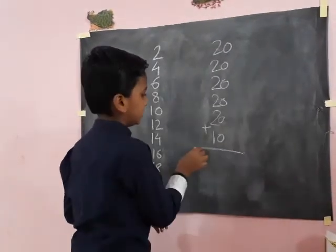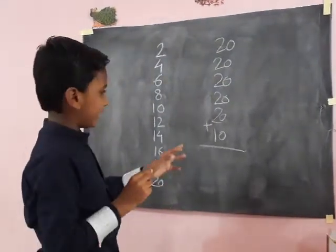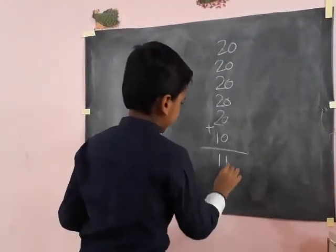Let's do it. 20 how many times? 1, 2, 3, 4, 5. 5 times 20 equals 100. 100 plus 10, 110.